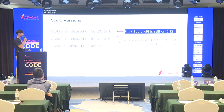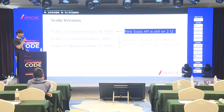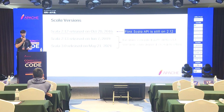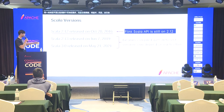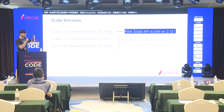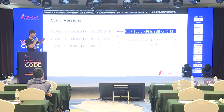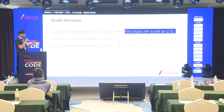Someone from the community tried to migrate Flink to 2.13, but it wasn't enough to get the pull request approved, and it got stuck. And when it would have happened for 2.13, then 2.13 and 3.0 are already interchangeable — you can use libraries from one version in another. So it was a bit unlucky, and the current Apache Flink is still on 2.12.